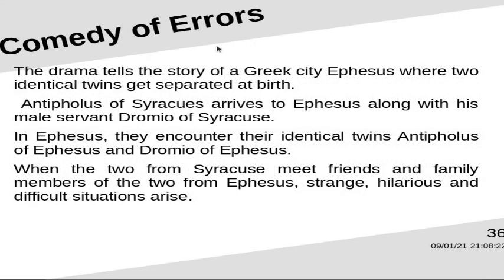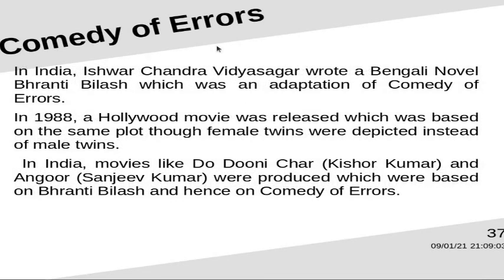The drama tells the story of a Greek city, Ephesus, where two identical twins get separated at birth. Antipolis of Syracias arrives to Ephesus along with his male servant Romeo of Syracias. In Ephesus, they encounter their identical twins, Antipolis of Ephesus and Romeo of Ephesus. When the two from Syracias meet friends and family members of the two from Ephesus, strange, hilarious and difficult situations arise. In India, Ishwar Chandu Vidya Sagar wrote a Bengali novel, Pranti Bilash, which was an adaptation of Comedy of Errors. A 1988 Hollywood movie was released based on the same plot, though featuring female twins instead of male twins. Indian movies like Do Do Do Ni Char, with Kishore Kumar, and Angur, with Sanjee Kumar, were produced based on Pranti Bilash and hence on Comedy of Errors.